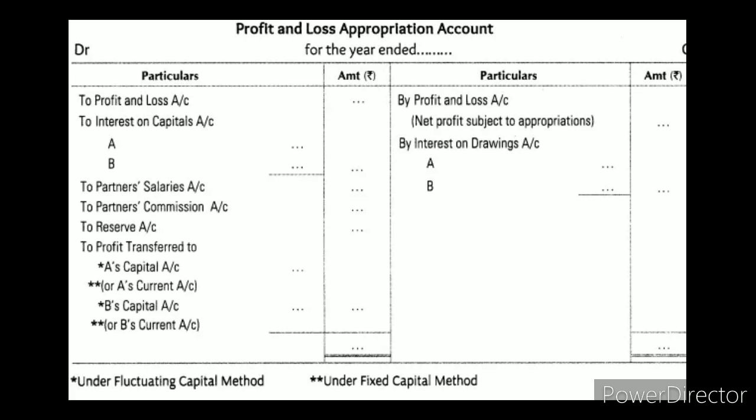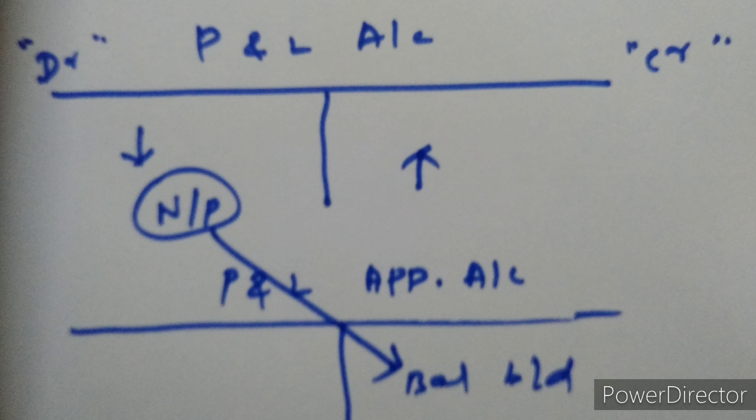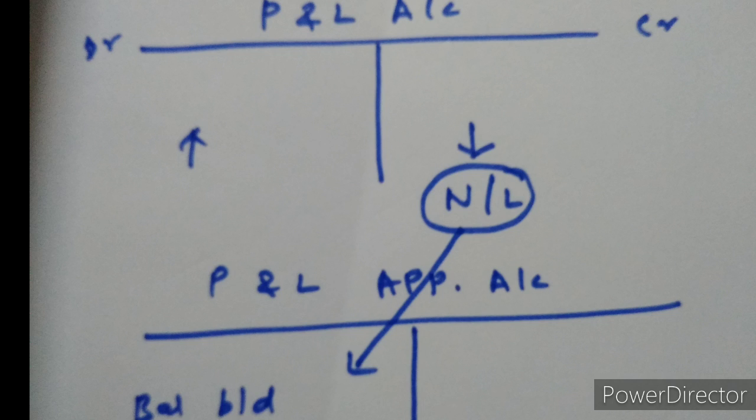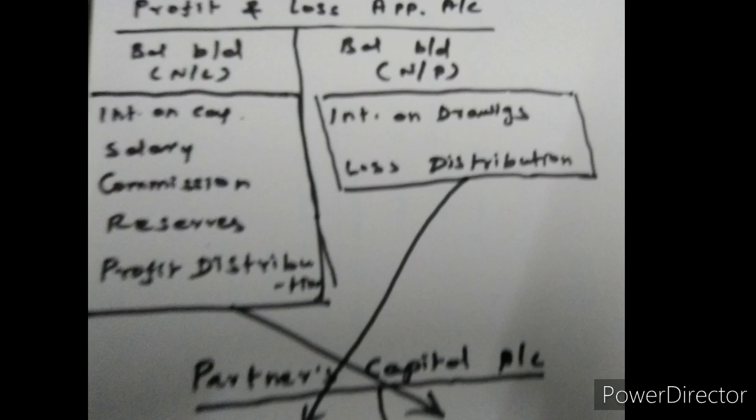The Profit and Loss Appropriation Account is debited with items of appropriation of profit, such as salary, commission, and interest on capital to partners, and transfers to reserves. These are all items divided from net profit. The credit side shows the net profit brought forward from the Profit and Loss Account, and it is also credited with items debited to partners' capital or current accounts, such as interest on drawings.